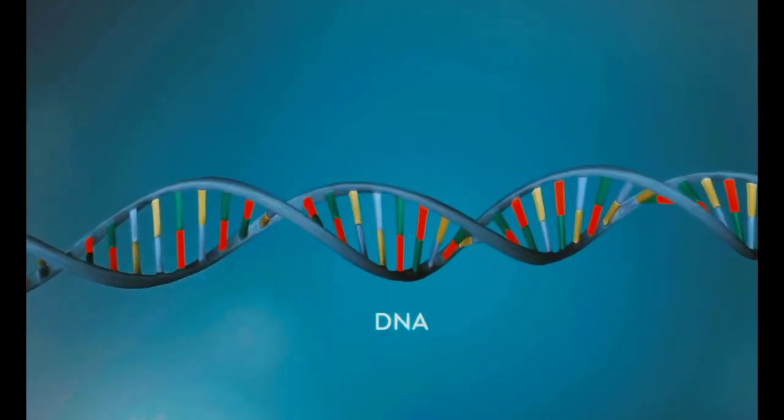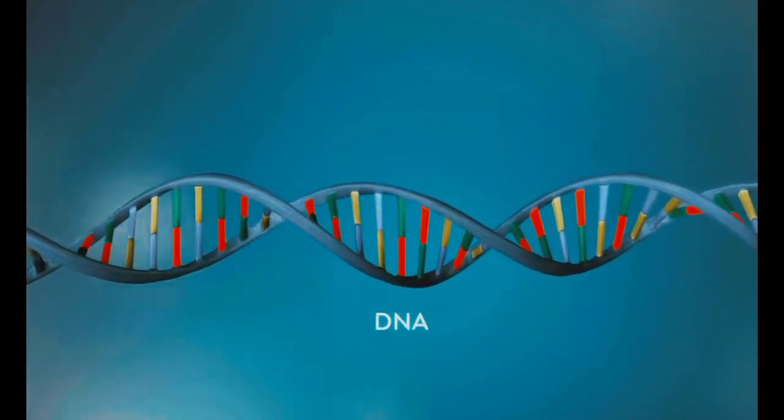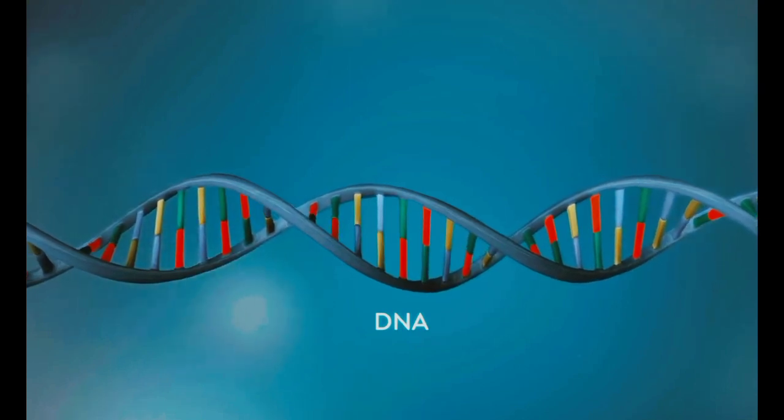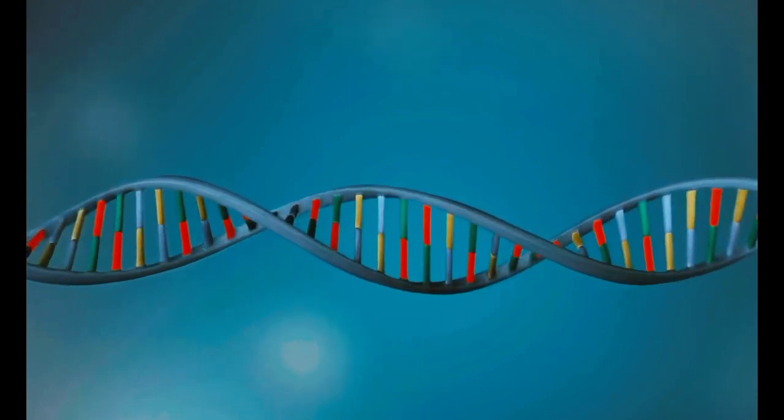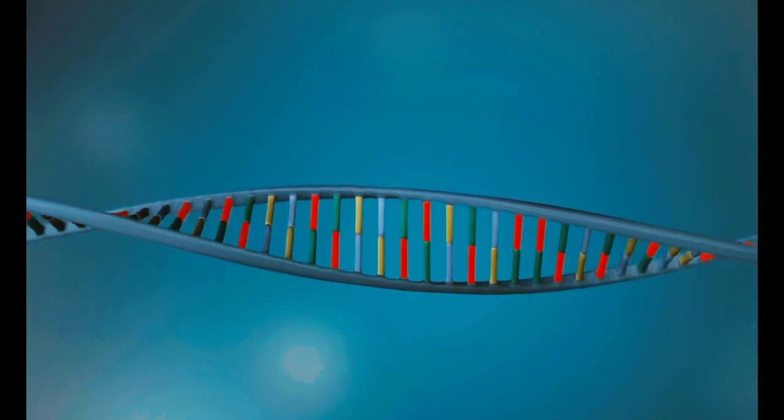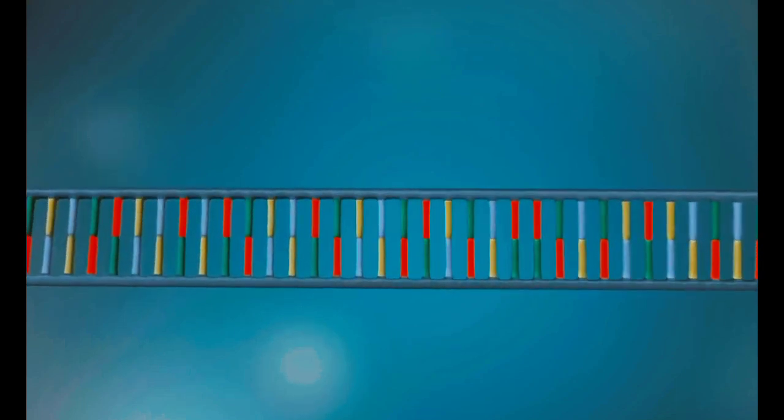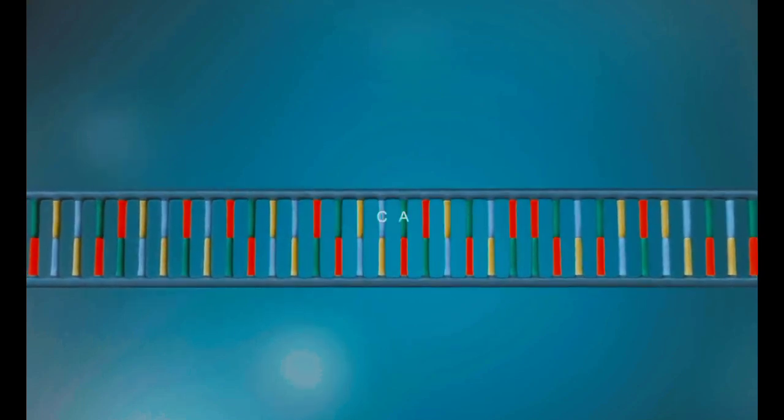DNA is a molecule made up of two strands twisted around each other in a double helix shape. Each strand is made up of a sequence of four chemical bases, represented by the letters A, C, G and T.